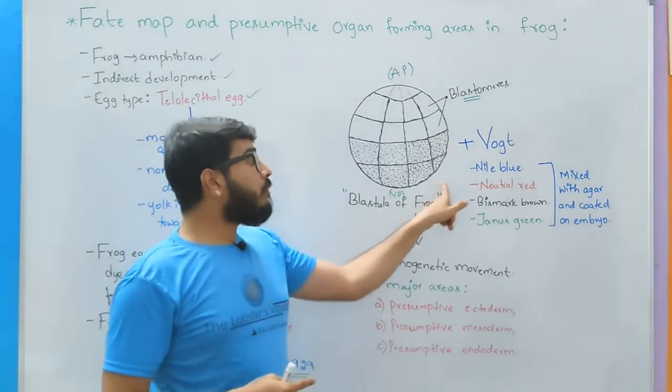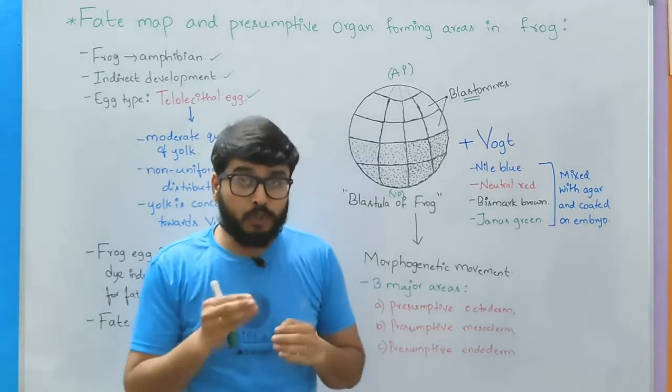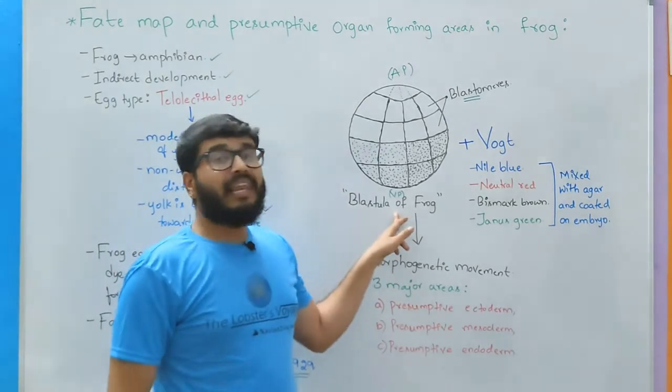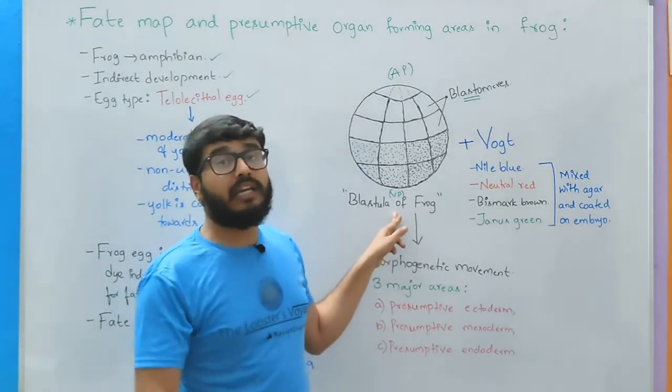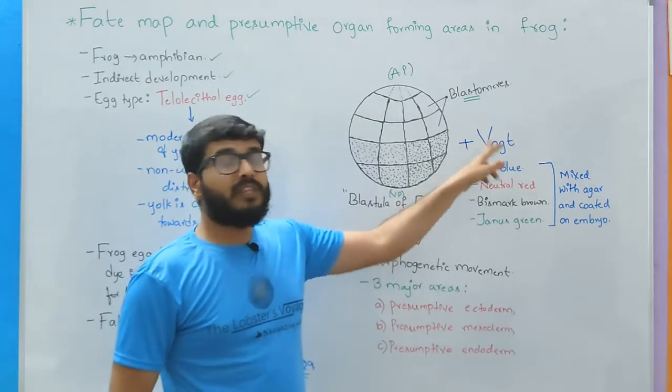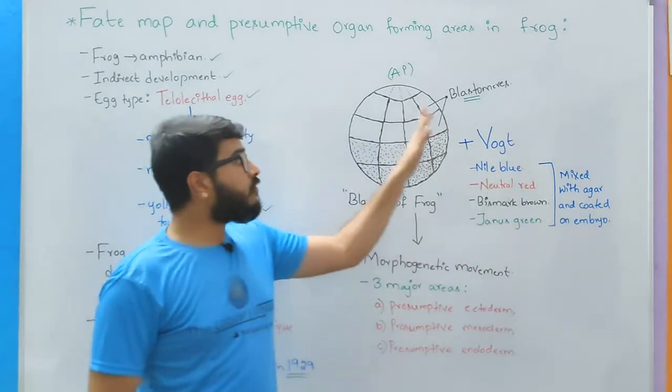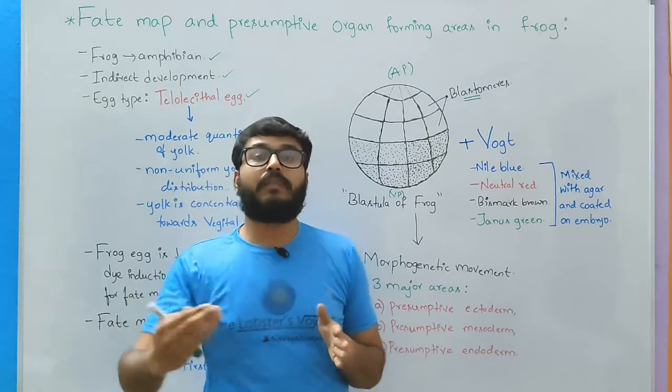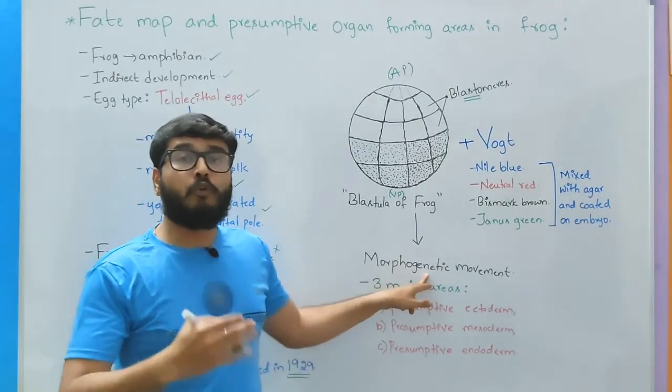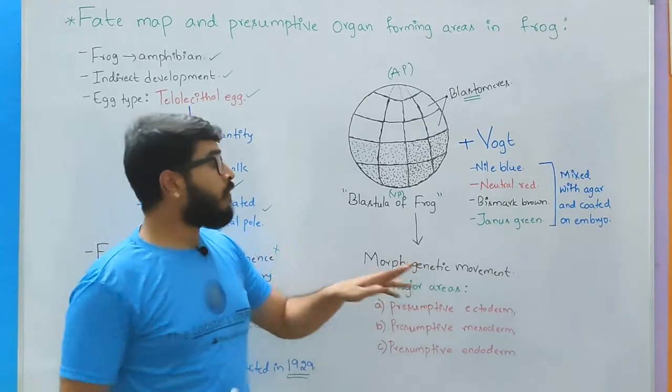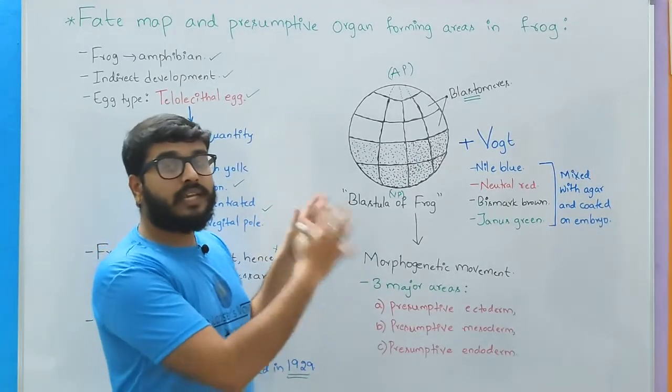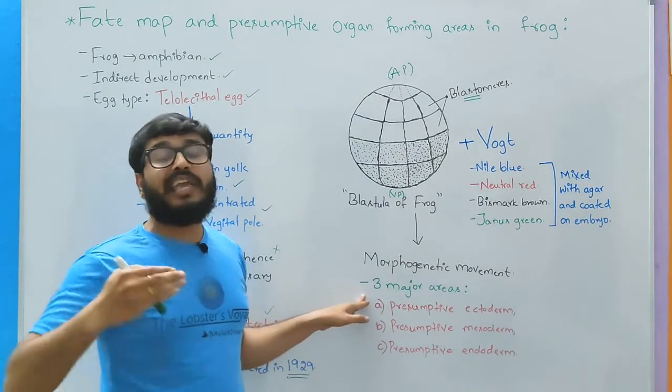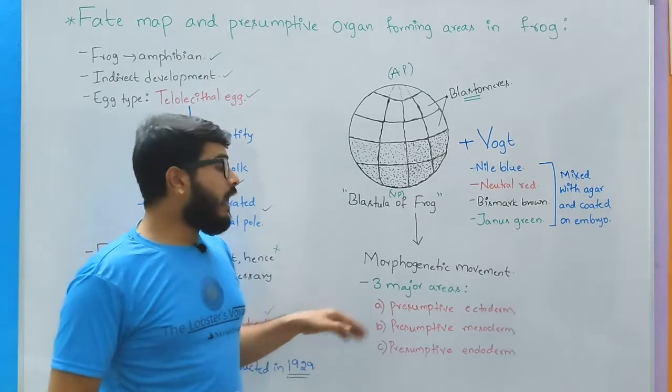Construction of the fate maps after blastula stage becomes difficult, and the most appropriate stage for the construction of the fate maps in case of frog is the late blastula stage or early gastrula stage, where we mix natural dyes with agar, it is finely coated, and after coating allow the embryo to develop naturally or allow for the morphogenetic movements to happen. Once the technique is applied and the morphogenetic movement is observed, basically three major areas are distinguished.